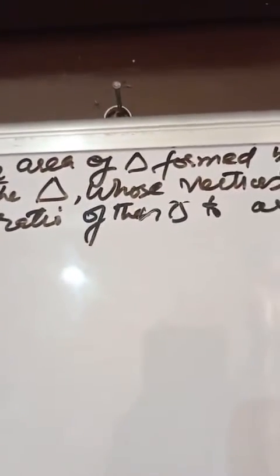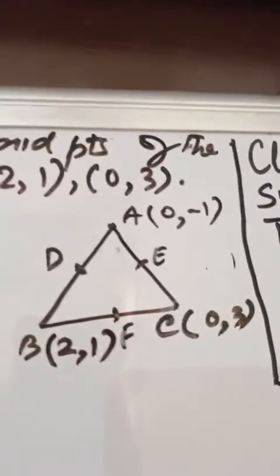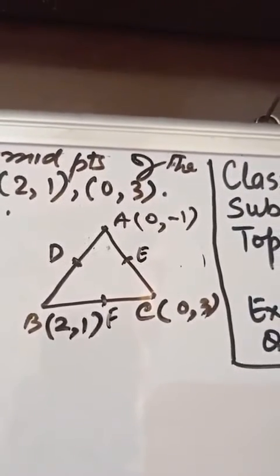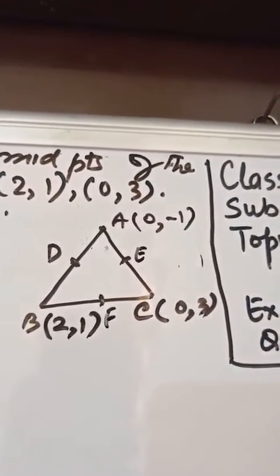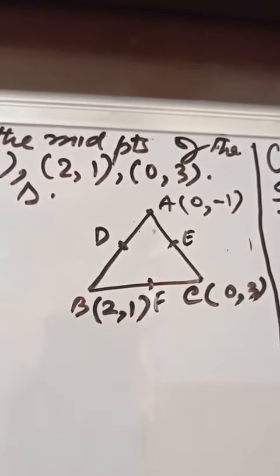Also find the ratio of that triangle with the area of the given triangle. Now we have a big triangle which is ABC with coordinates: A (0, -1), B (2, 1), C (0, 3). This is the given triangle ABC.